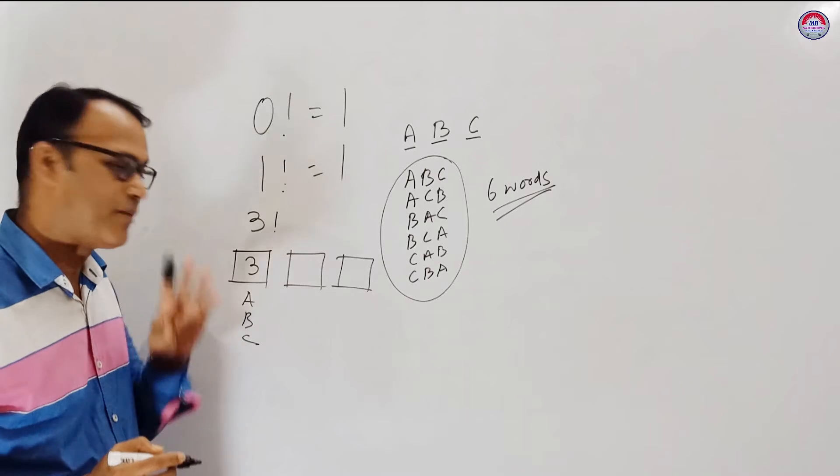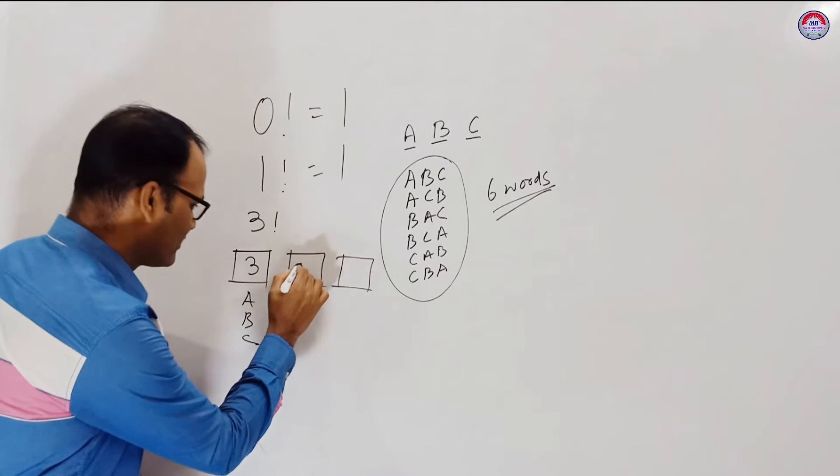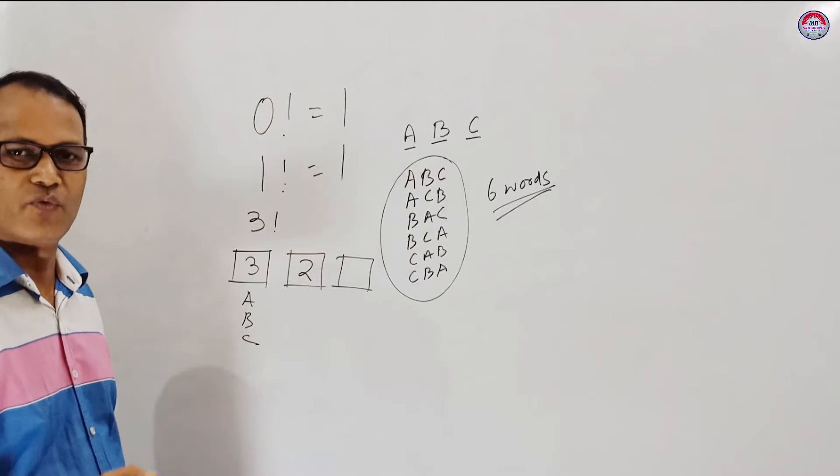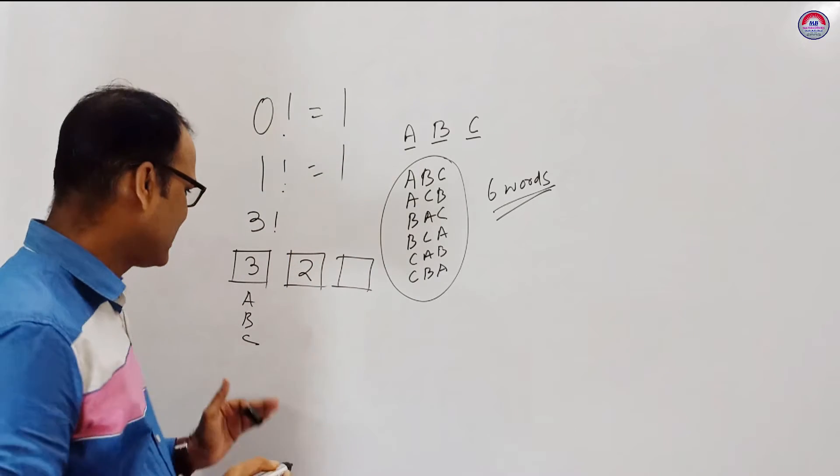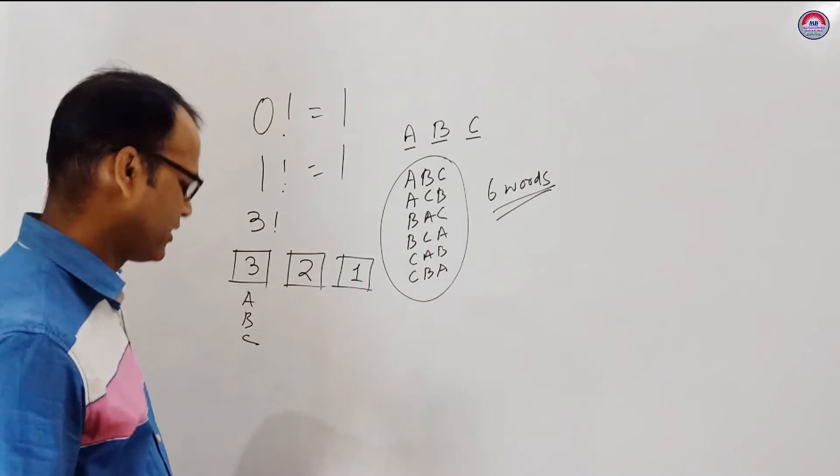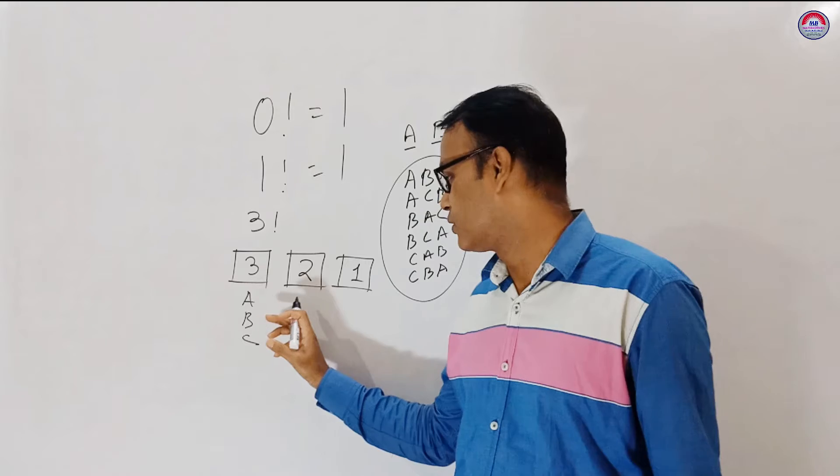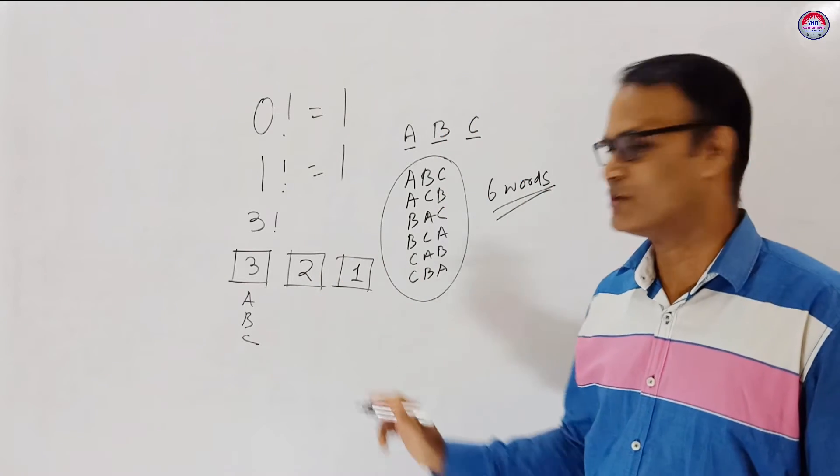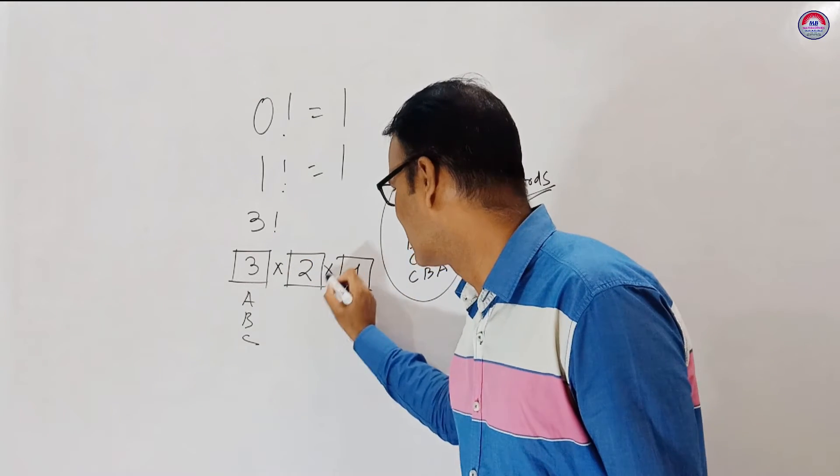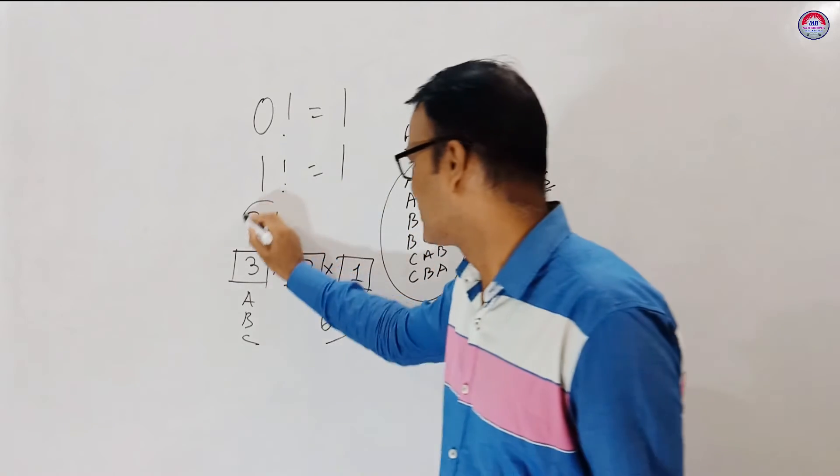So to fill the first place we can use these three letters A or B or C, so number of ways to fill this place is 3. If you fix a letter here then we have two letters now. Second place we can fill two ways. Similarly third place can be filled by one.